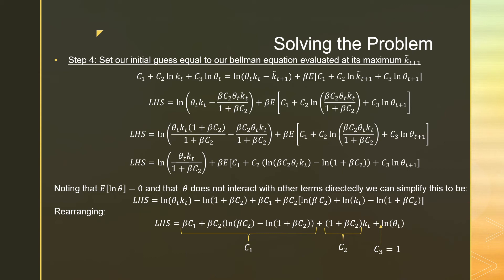Step number four here, we're going to set our initial guess equal to our Bellman equation evaluated at KT plus 1. So this is a mess. We're just going to plug this in and work through the algebra. I'm not going to speak that out. But one key thing that we should see, which is essential for solving that, is noting that the expectation of ln theta is equal to 0